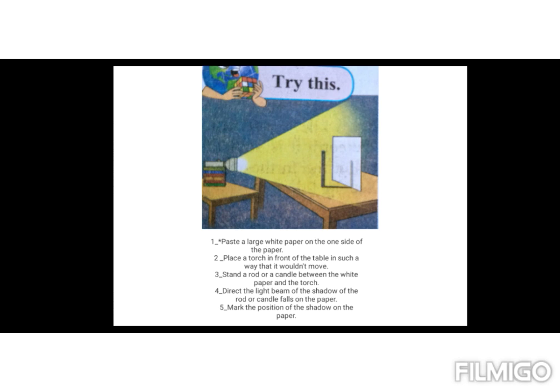Next, direct the light beam of the torch in such a way that the shadow of the rod or candle falls on the paper. Mark the position of the shadow on the paper.